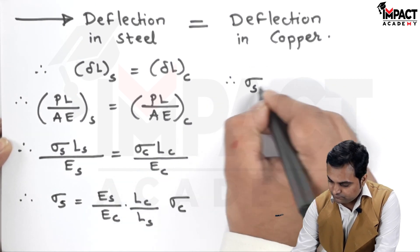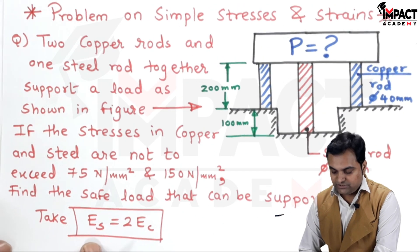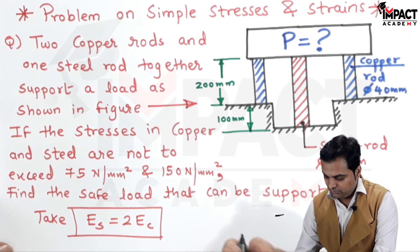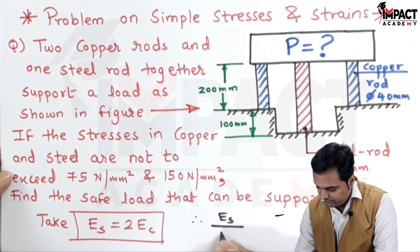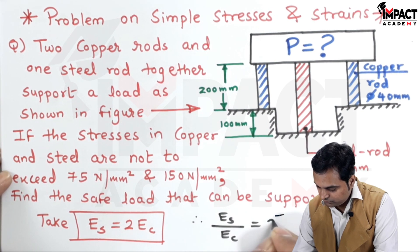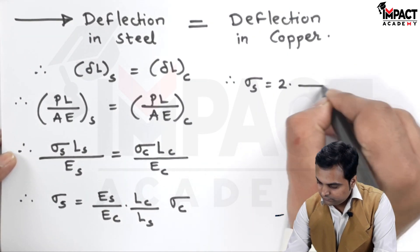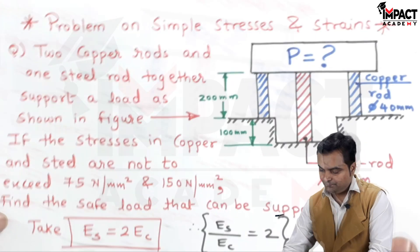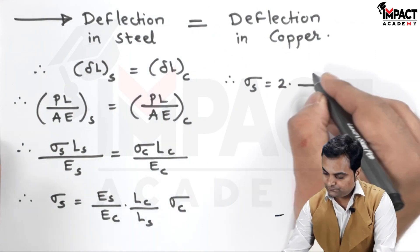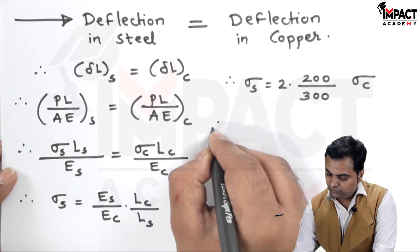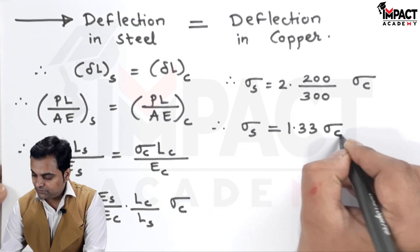The Young's modulus relation is given in the problem: E_s is twice E_c, so E_s / E_c = 2. The length of the copper rod is 200 mm and the steel rod is 300 mm. Substituting these values, σ_s = 2 × (200/300) × σ_c = 1.33 σ_c. This is equation number one.